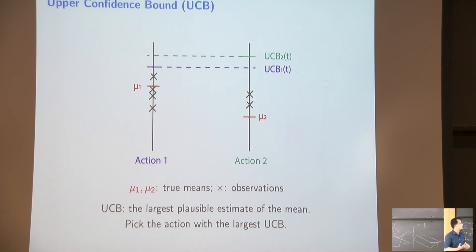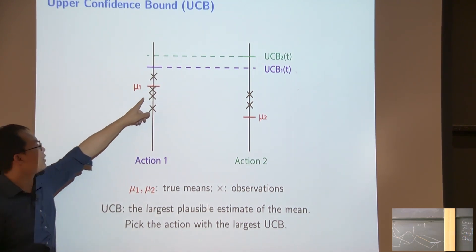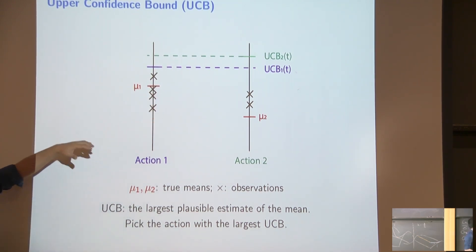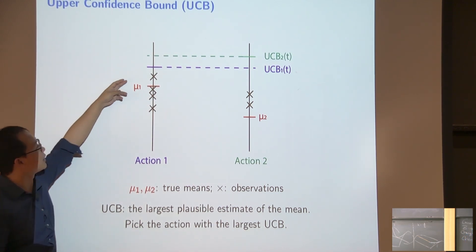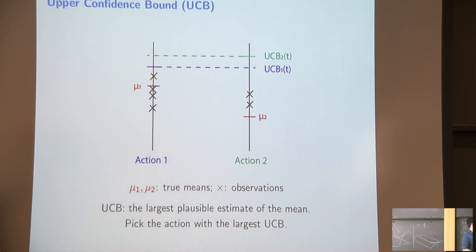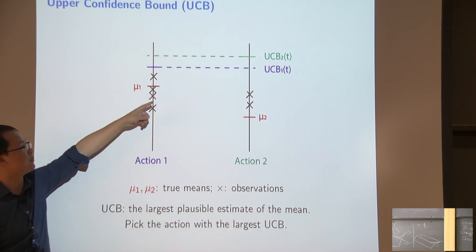Like I maintain some confidence of each arm. So for example, in this case, I pull first arm four times, where the cross is kind of like the value I pull it. And the mu1 is like my mean. Mu1-star is a true mean. So then in this case, empirical mean is here, and I have a confidence roughly. I'm saying like at most, my true mean cannot be greater than this UCB1, the blue curve.